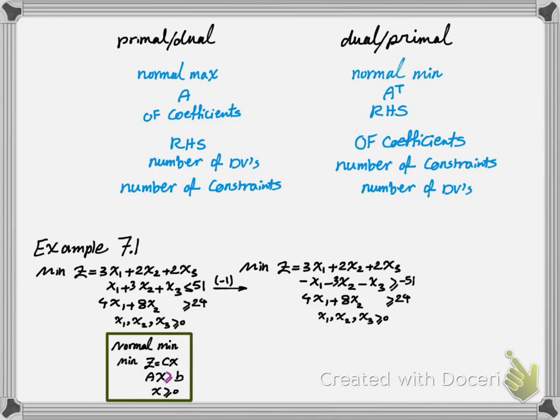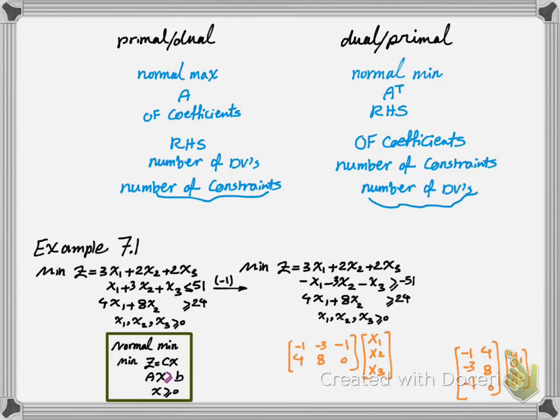The first thing we want to do is write the matrix of the coefficients in the constraints. And if I transpose that I'm going to get the matrix of coefficients in my dual problem. Now remember that the number of constraints in the primal becomes the number of decision variables in the dual. So in the primal we have two constraints, which means we're going to have two decision variables in the dual programming — that's why you only have y1 and y2.